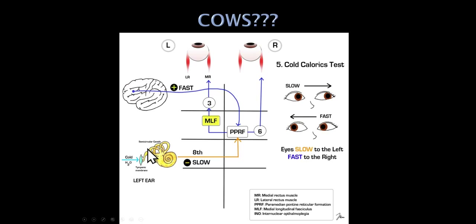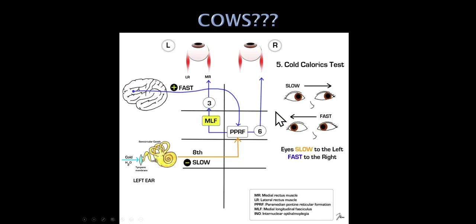If we put cold water in the left ear, that inhibits the opposite PPRF sixth nerve complex on the right side. Normally, the right PPRF sixth nerve complex wants to drive the eyes to the right. The sixth nerve talks to the lateral rectus; the crossing pathway via the MLF lets the third nerve communicate with the medial rectus. So if we inhibit the right brainstem, the tone pushing the eyes to the right is diminished, and the left PPRF sixth nerve complex becomes relatively overactive — pulling the eyes to the left.